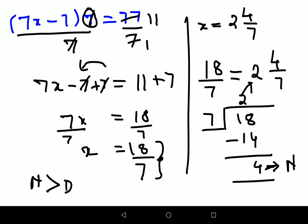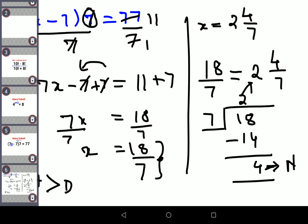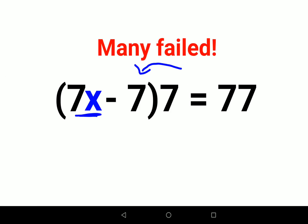I hope this is clear to everyone. Now let's go back to our question. We got the value of x as 18 upon 7, or we can write this as 2 4/7. Let's put this over here and see if we get the value of 77.